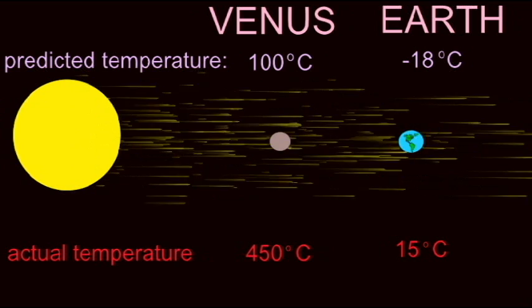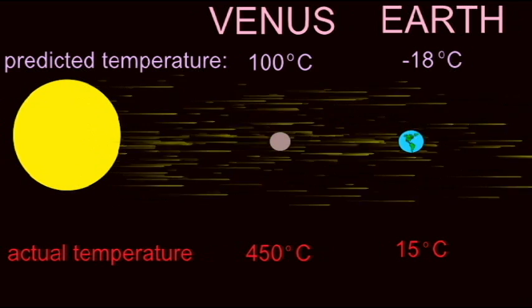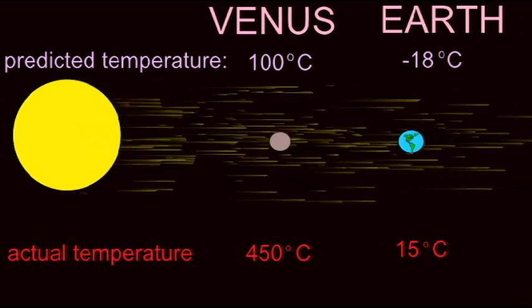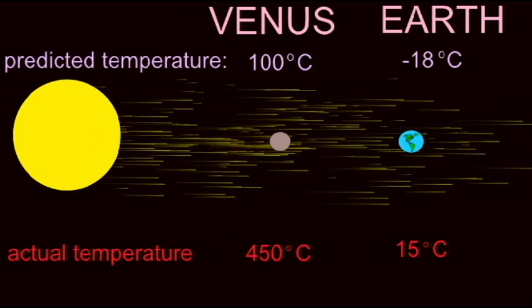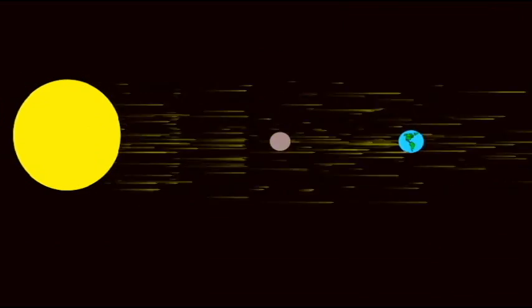The Earth's atmosphere possesses water vapor, carbon dioxide, and other molecules which absorb heat, and its average temperature is 15 degrees Celsius. Both of these planets are warmed by a greenhouse effect.